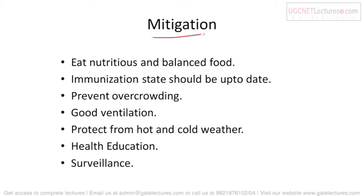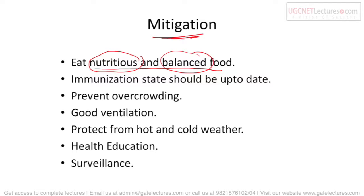Structural mitigations for biological disasters include eating nutritious and balanced food to keep your body healthy and disease-free. Immunization should be up to date — vaccinations, especially for children, must not be skipped or allowed to expire. We should also prevent overcrowding in areas affected by a biological disaster.